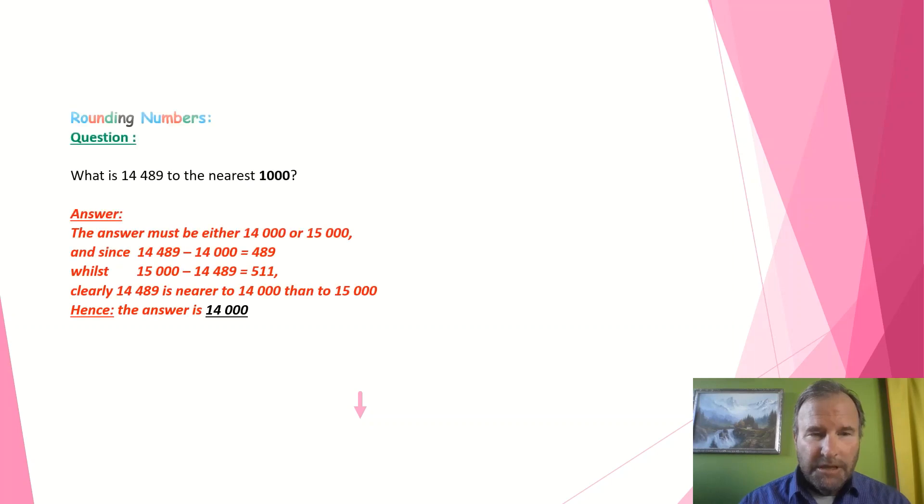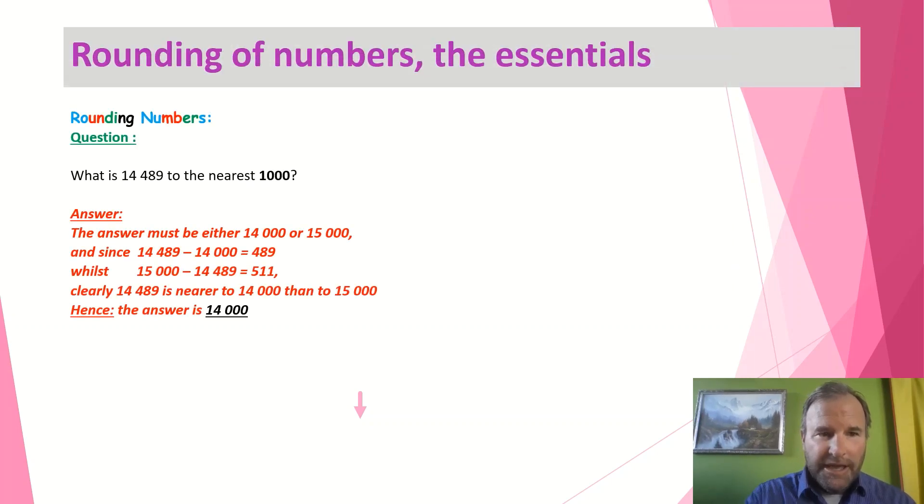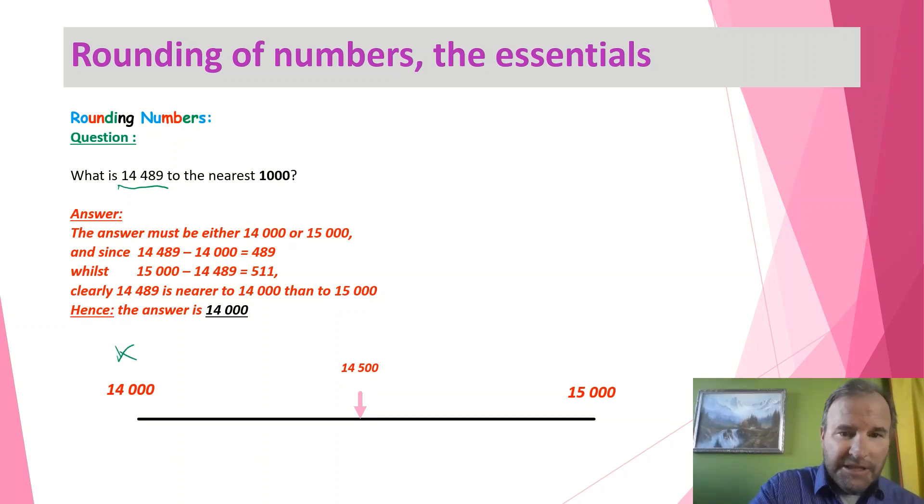So here's the first example. We're looking at what is 14,489 to the nearest thousand. Going through it, the answer must either be between 14,000 or 15,000. Using our number line here, it's between those two points—14,000 and 15,000. We have a look at that. Since 14,489 take away 14,000 gives us 489, you can see that number smaller, that's closer to 14,000. So that's that number here. You can see it's closer to 14,000.